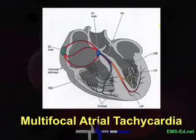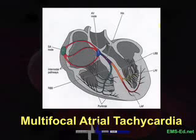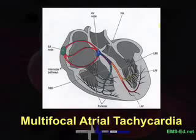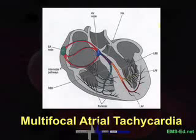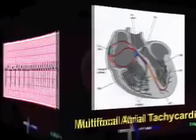MAT has a mechanism almost completely unlike AFib. In MAT, the atria actually contract — they don't just fibrillate ineffectually. There's not the same clot issue, and the clinical issues are not the same. COPD patients own this rhythm. It's much more clearly seen in a 12-lead, and if you're trying to distinguish AFib from MAT, you'll probably need a 12-lead.